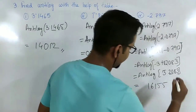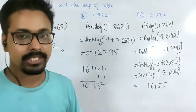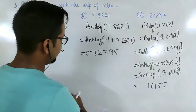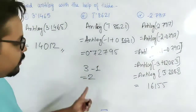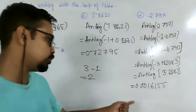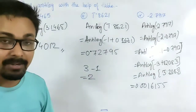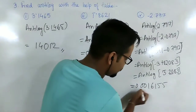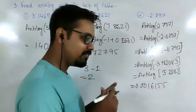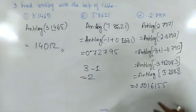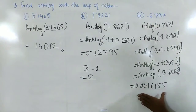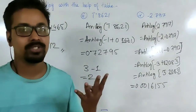The characteristic is minus 3. Using the formula, take the absolute value 3, subtract 1 to get 2. So there are 2 zeros after the decimal point. The final answer is 0.0016155. This can also be understood conceptually: a characteristic of minus 3 means the number has 2 zeros after the decimal point before the first significant digit.